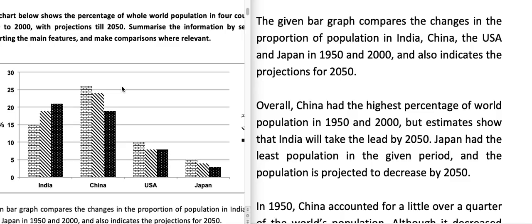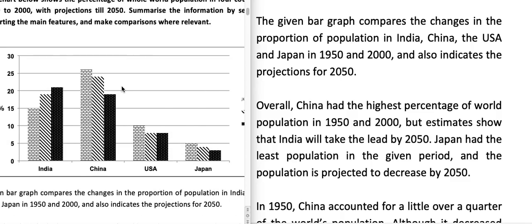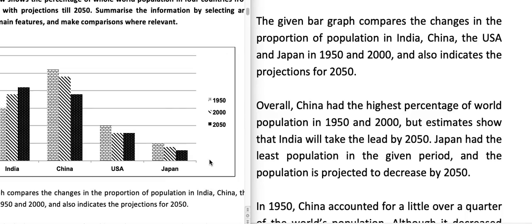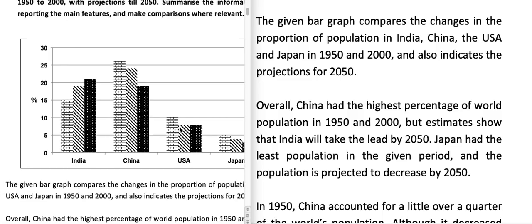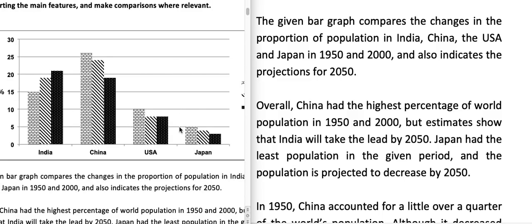On the y-axis we have the percentage. There are four countries: India, China, USA, and Japan. There are three years — the first column is for 1950, the second one is for 2000, and the third column is for the year 2050.